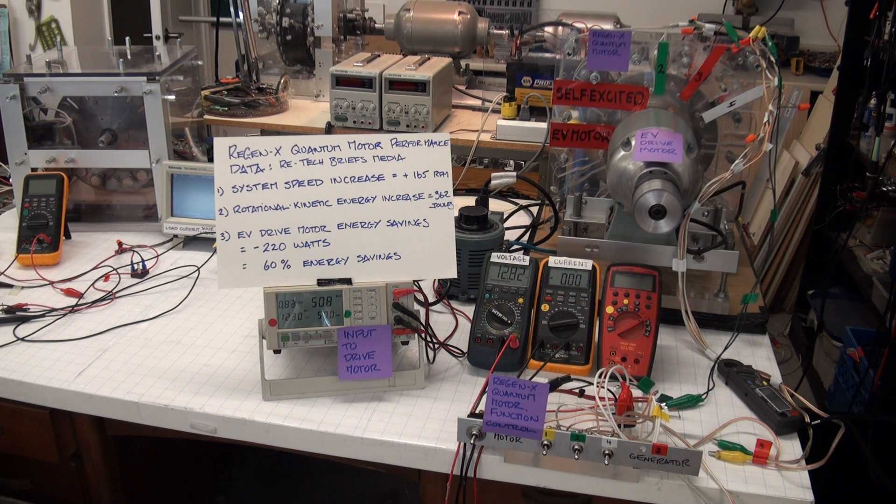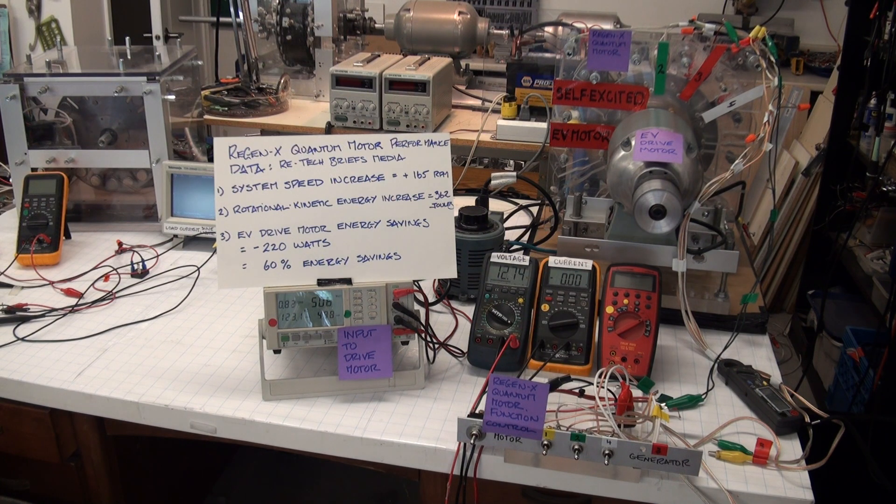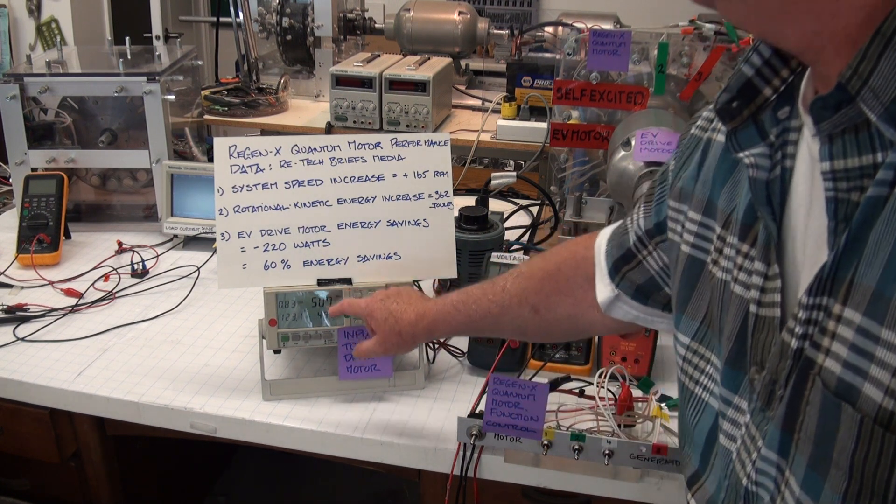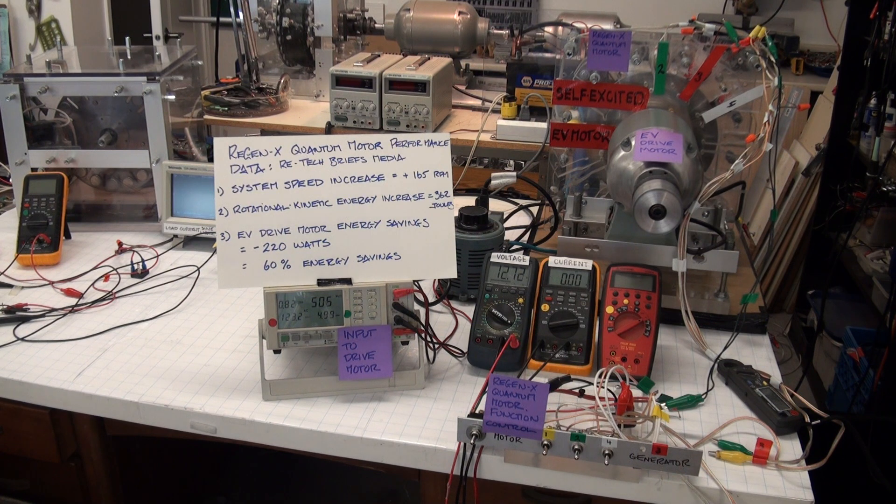Coil number 3 that's in the prototype is a conventional generator coil, in that when it delivers power to the battery it decelerates the system. What we'll see is the input to the prime mover will increase when I place it on load.